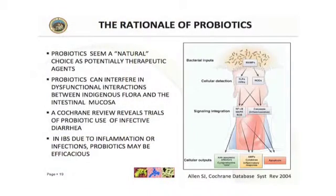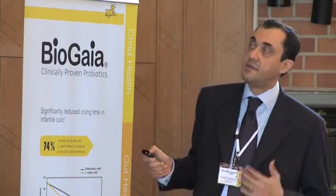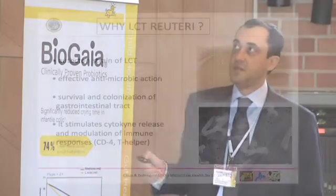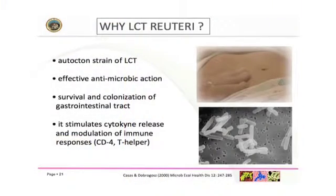In irritable bowel syndrome, probiotics may be efficacious in controlling inflammation or infection in these patients. Lactobacillus reuteri is a good choice for supplementation because it is an autochthonous strain of Lactobacillus with effective antimicrobial action. The survival, colonization of the gastrointestinal tract, and immune function of Lactobacillus reuteri have been well demonstrated.